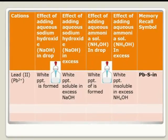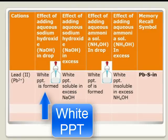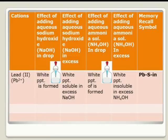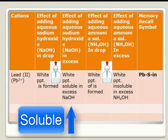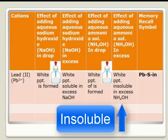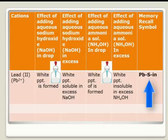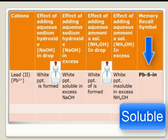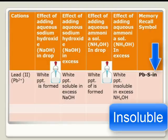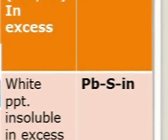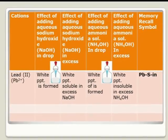Lead also forms a white precipitate with both sodium hydroxide and ammonium hydroxide. In excess sodium hydroxide, the white precipitate is soluble. In excess ammonium hydroxide, the white precipitate is insoluble. The recall symbol is P-B-S-I-N: PB stands for lead; S stands for soluble in excess sodium hydroxide; and IN stands for insoluble in excess ammonium hydroxide. So PBSIN gives you a recall for this test process.